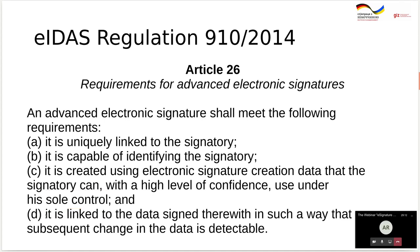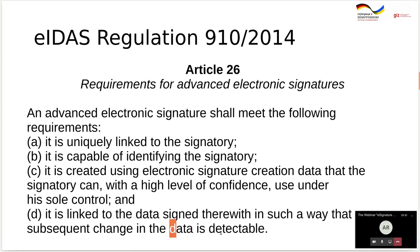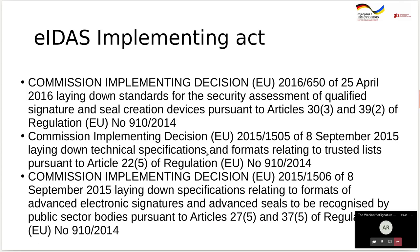The last property of advanced electronic signature is integrity: if the data is changed after the signature is applied, this change will be detectable. This is a crucial part of the signature and trust in end documents. To fulfill the definition of advanced electronic signature, the European Commission made three different implementing decisions.